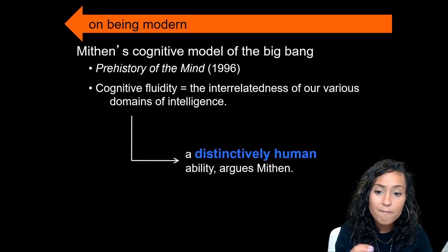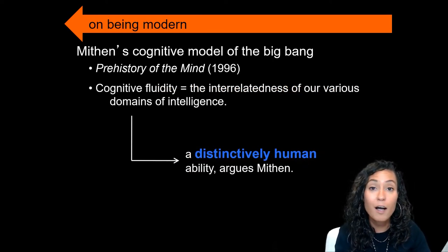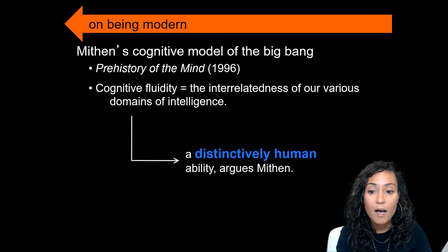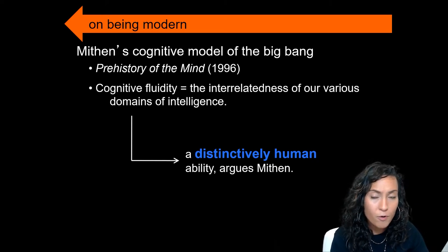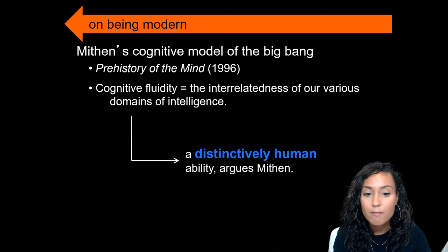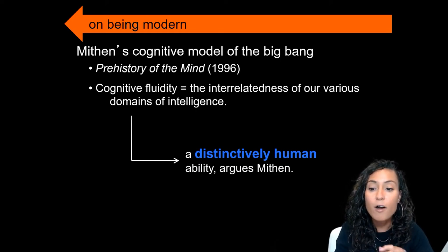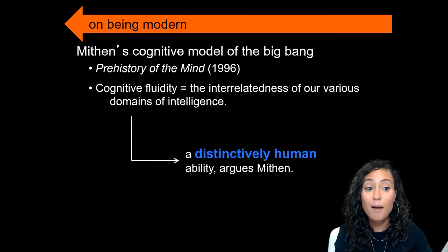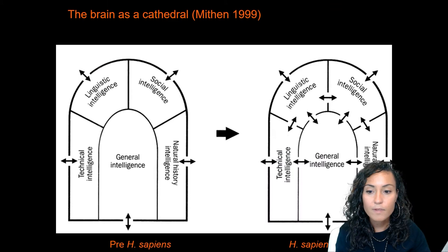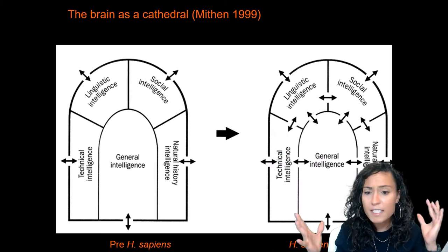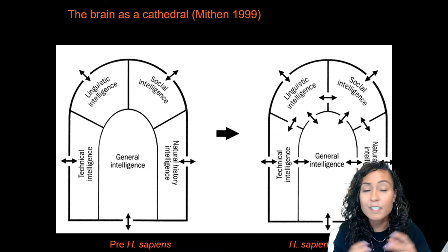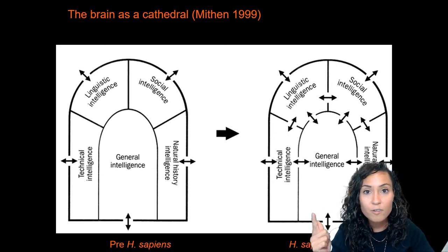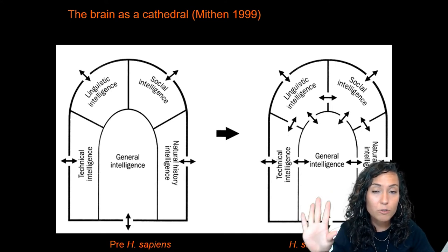Mithin first proposed this model in 1996 in a book called The Prehistory of the Mind. According to Mithin, cognitive fluidity refers to the interrelatedness of our various domains of intelligence and is a distinctly human ability. For Mithin, our brains resemble a cathedral composed of different types of intelligences: natural history, general, technical, linguistic, and social intelligence.